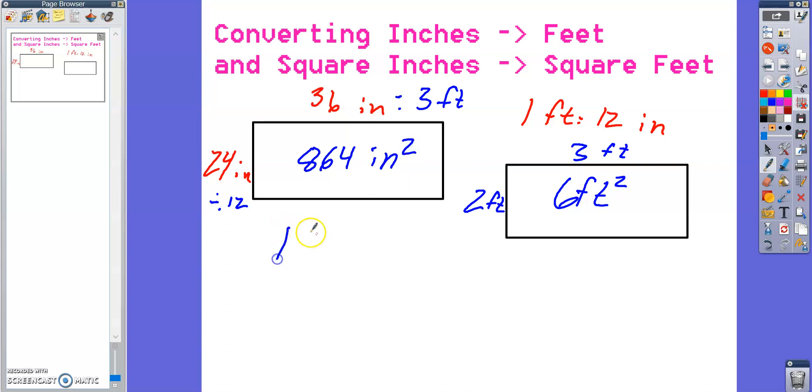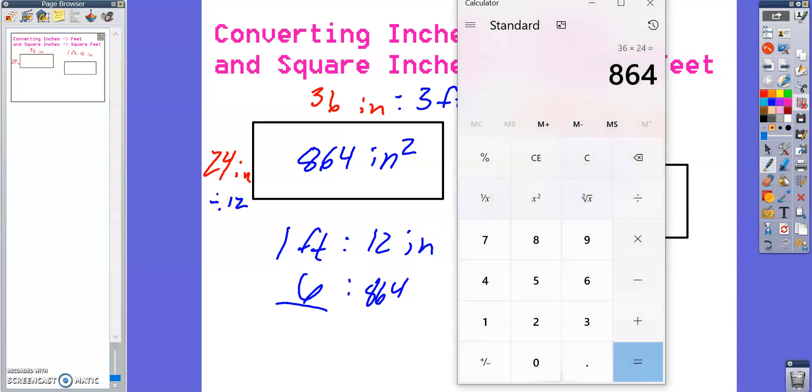So same logic, right? 1 foot is equivalent to 12 inches. So theoretically, if I put 864 over here, that should give me 6. But if I divide this by 12, it doesn't feel right. That would give me 72.